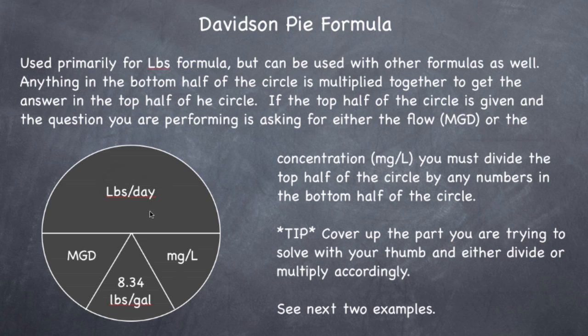Now, this can also work backwards. If they gave you the pounds per day and wanted to know the concentration or the flow, what you would do is you would put pounds per day. And if they gave you the concentration, you would put it in here. You would put this number down here because it's your constant. And if you took this number and divided it by everything on the bottom that you had, you would wind up with flow. Or if you had flow and you wanted to find concentration, you would divide pounds by flow by 8.34. And it would give you your concentration in milligrams per liter.